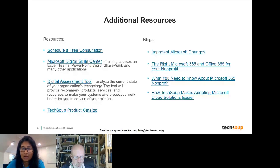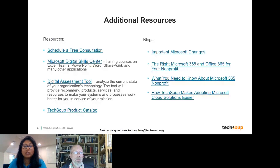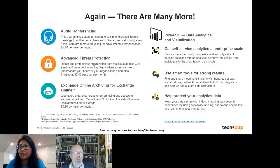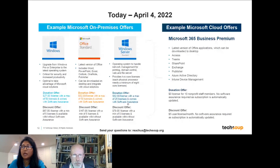Rebecca asks: the email said on-premises options were going away in 2022, but you're saying they're still there. To clarify: on-premises options will still remain after April 2022, but they will not be available as a donation offer. The cost will increase because they will only be under a discounted model. For example, Office Standard and Windows Server are currently available for a $52 administrative fee — that will not be available after April 4th, and they will only be available as a discounted offer.